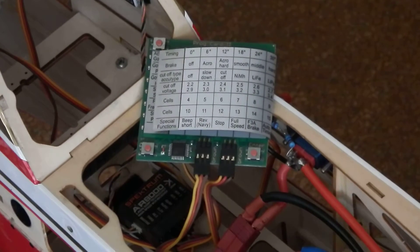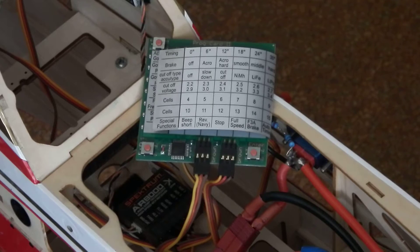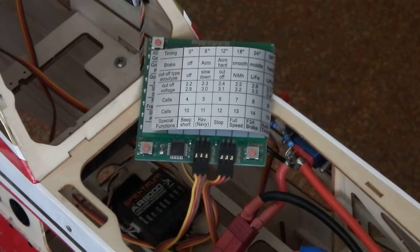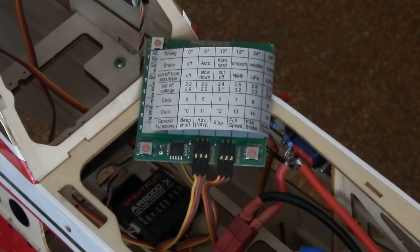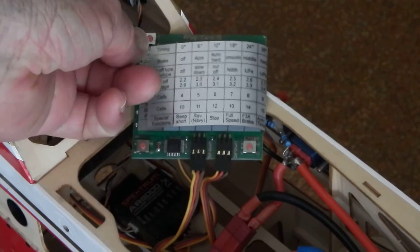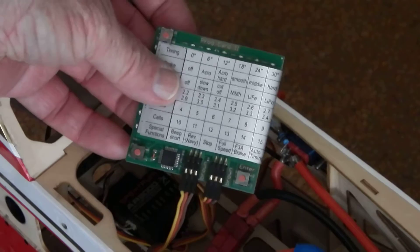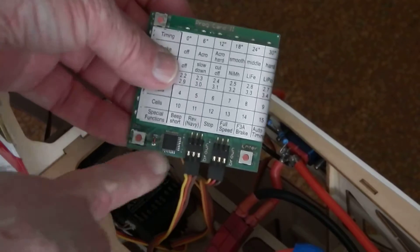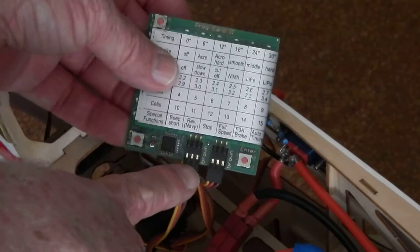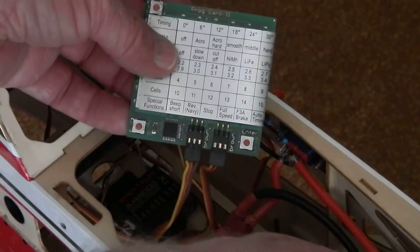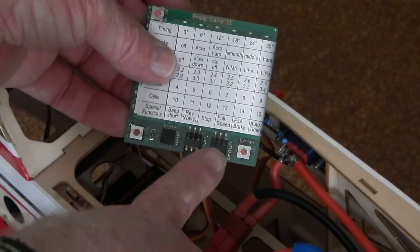This video shows you how to set up the F3A brake completely, no bits missing. With the YEP controller, you need the left-hand connector to go through to the YEP controller. The right-hand connector goes into the throttle channel on the receiver.